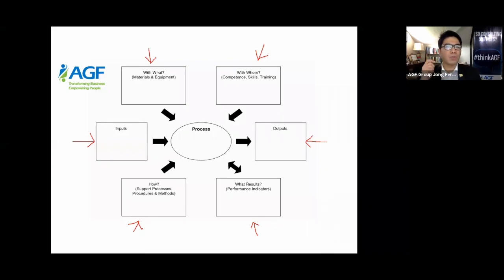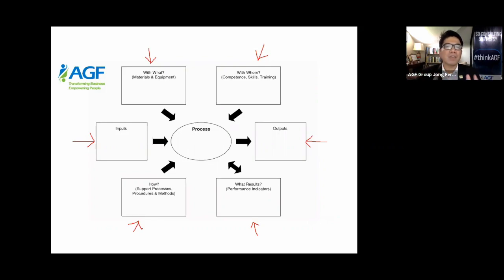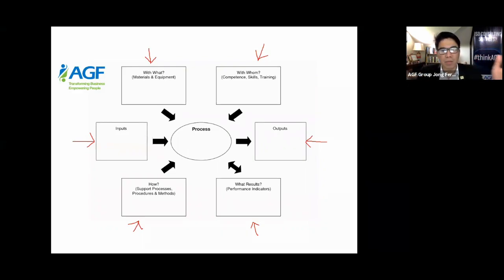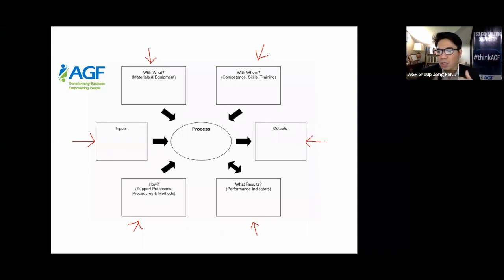A process audit, as the name dictates, is very focused on auditing the process itself. The lead auditor, having audited the system, would normally assign specific procedures or processes to audit team members. For example, if I'm a process auditor, the lead auditor might assign me the preventive maintenance procedure, and I would focus my entire audit on that.